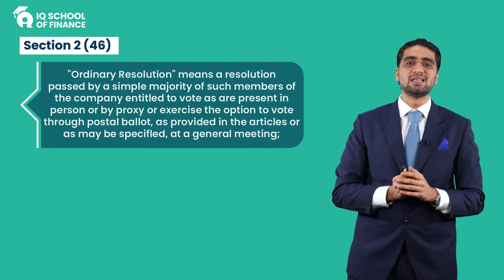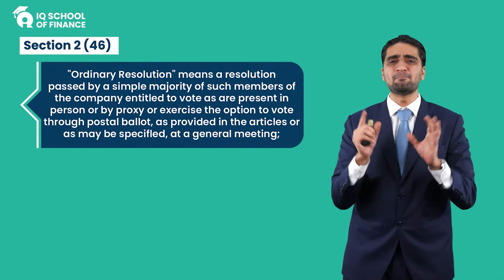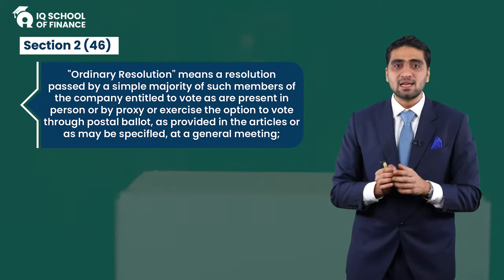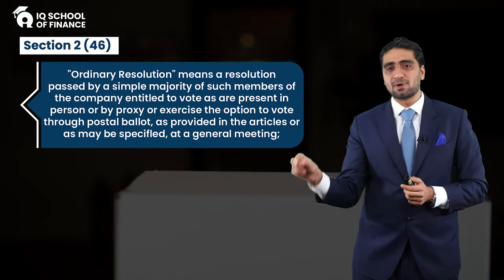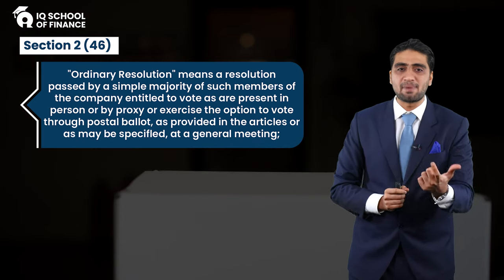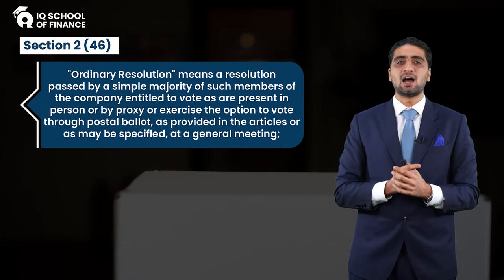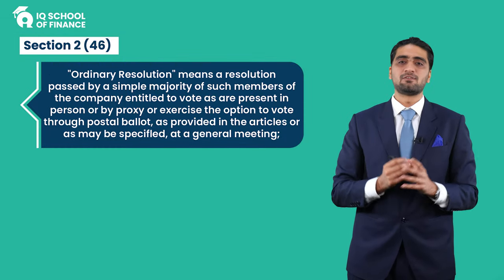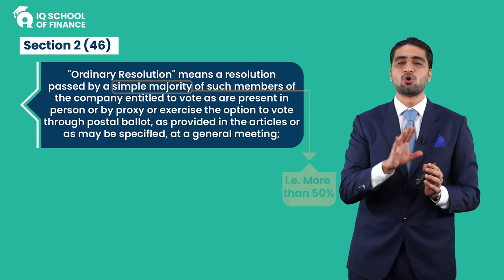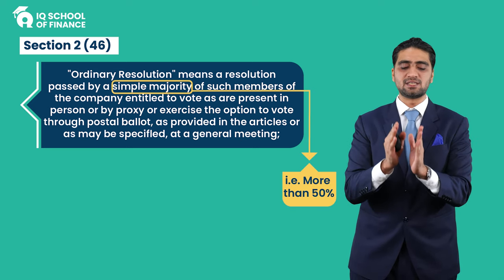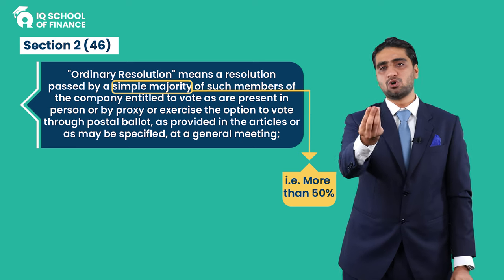What is ordinary resolution? Ordinary resolution means a resolution passed by a simple majority of such members of the company entitled to vote as are present in person or by proxy, or exercise the option to vote through postal ballot, as provided in the articles or as may be specified at a general meeting. In simple words, simple majority means more than 50%. Ordinary resolution means simple majority — more than 50% will agree.